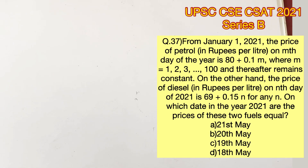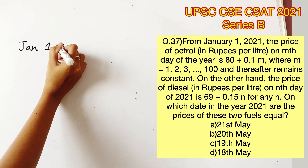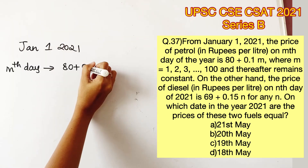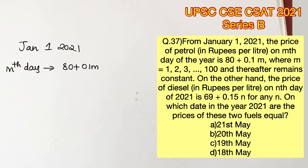Welcome to Aptitude Destination. Please pause the video and read the question completely. From January 1, 2021, the price of petrol on the m-th day of the year is 80 plus 0.1m. Now m is said to range from 1 to 100, and after 100 it is said to be constant.